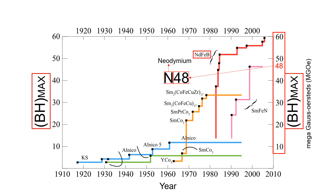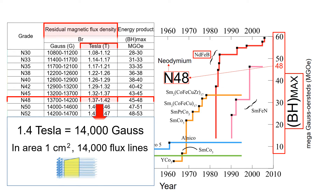Going back to this graph, by looking at the magnet data, it is evident that the N48 grade possesses a residual magnetic flux density, denoted by Br, of 1.4 Tesla. So 1.4 Tesla indicates the presence of fourteen thousand flux lines within the one centimeter square area.